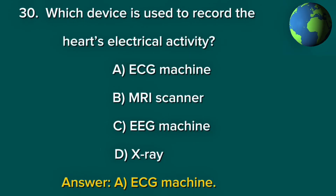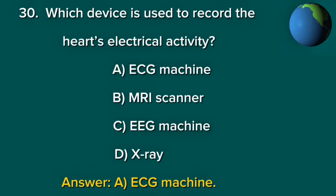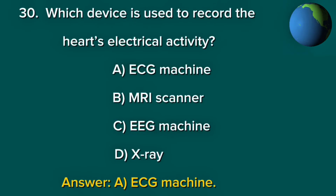Question 30. Which device is used to record the heart's electrical activity? A. ECG machine. B. MRI scanner. C. EEG machine. D. X-ray. Answer: A. ECG machine.